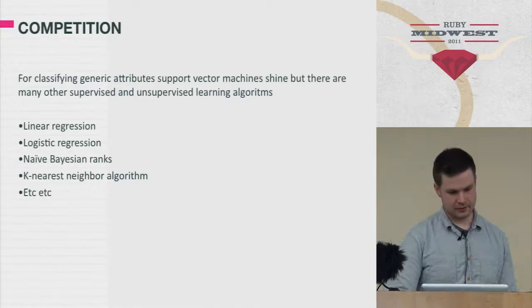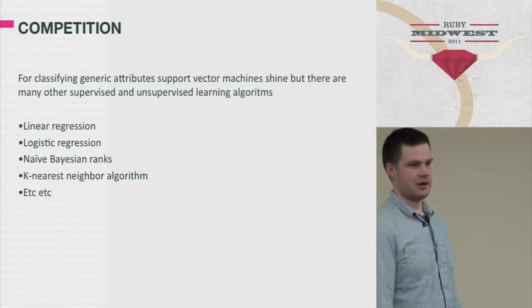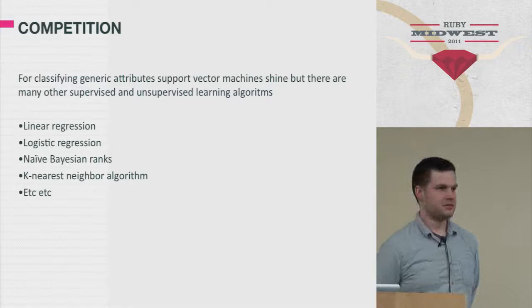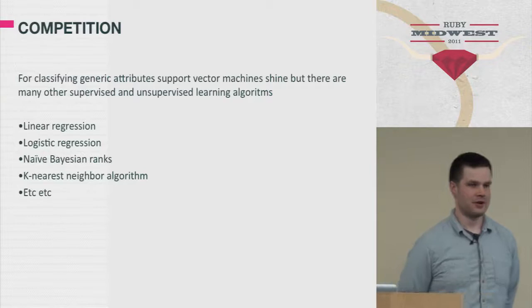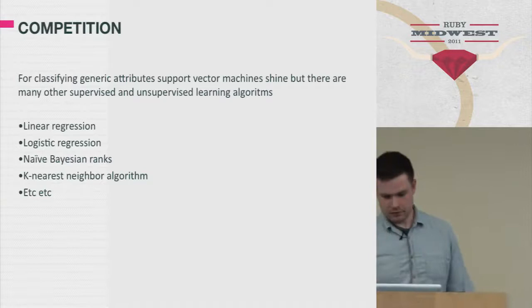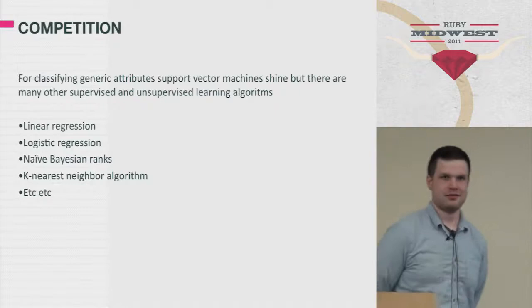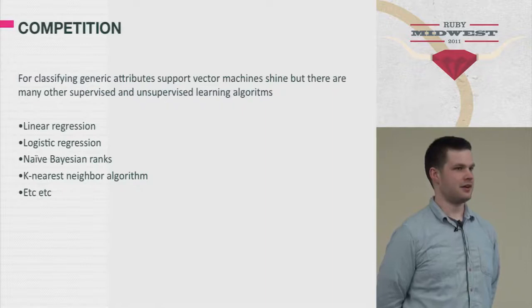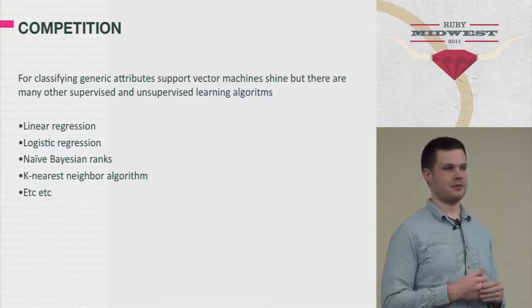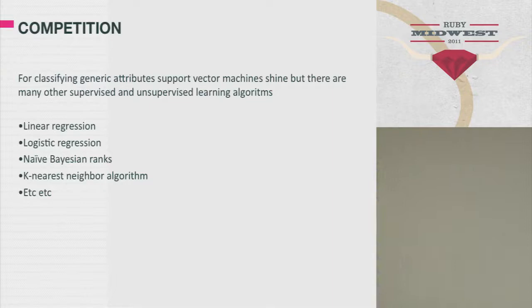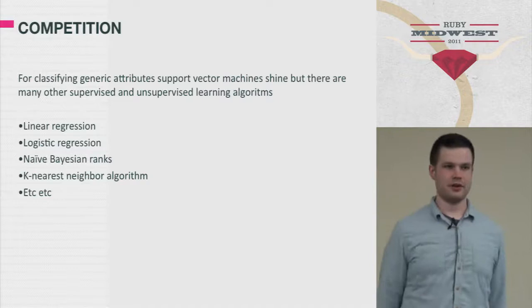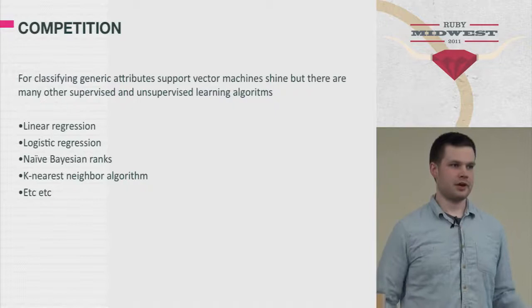I'd like to recommend that you look at some of this other stuff — Bayesian ranking, linear regression, logistic regression. Just because I talked about support vector machines doesn't mean you shouldn't learn about these things; they're all good for their own reasons. What you should get out of this is that we have data, and whether or not you use support vector machines, you really should start thinking about whether you can utilize the data you have and bring it back to the user in some sort of a recommendation format. Amazon does this with book recommendations, and after they did that their revenues went up quite a bit. When you're able to pair things together, your users will be much, much happier.